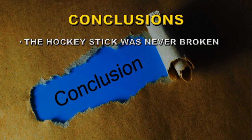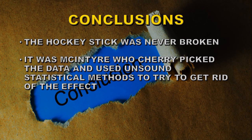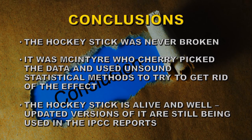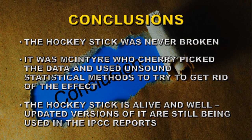So let's draw some conclusions from all of this. The hockey stick was never broken. It was McIntyre who cherry picked the data and used unsound statistical methods to try to get rid of the effect. The hockey stick is alive and well. Updated versions of it are still being used in the IPCC reports, and I wouldn't mind betting that the next IPCC report will have at least one version of it. This is because the effect is in the data — the sudden rise of global temperatures is in the data, and you can't avoid it if you use sound analysis techniques.